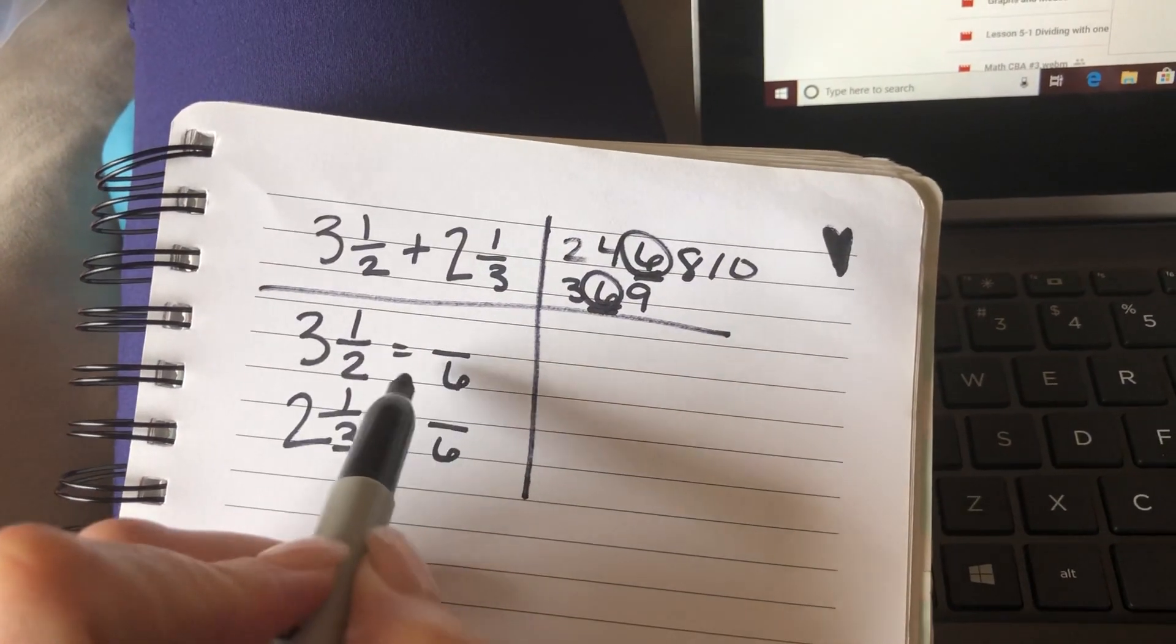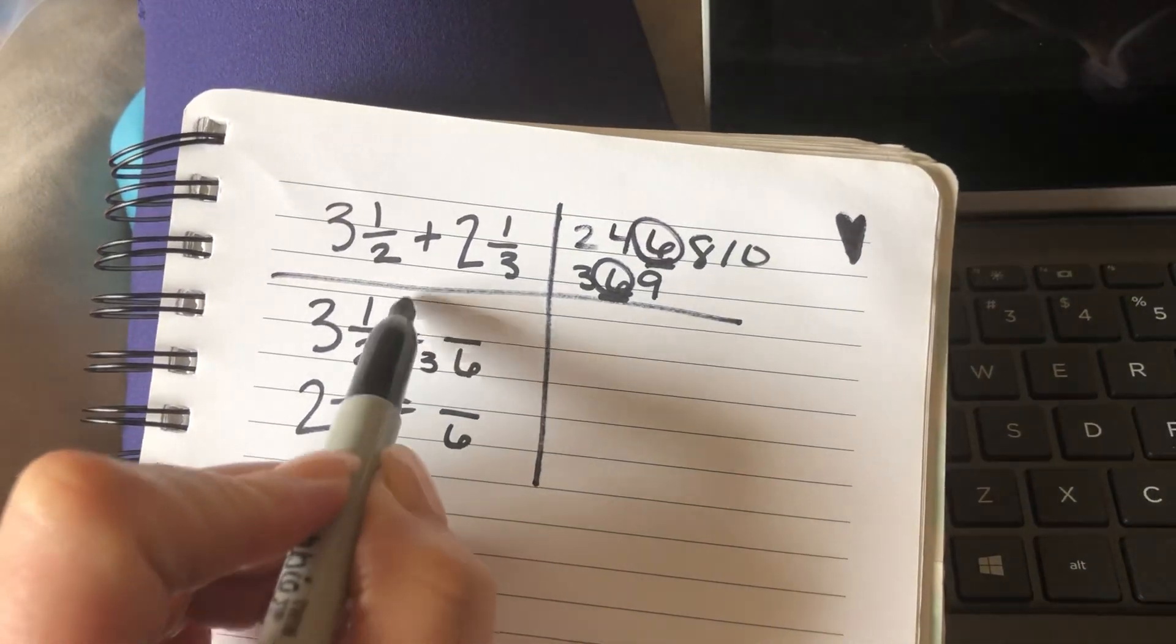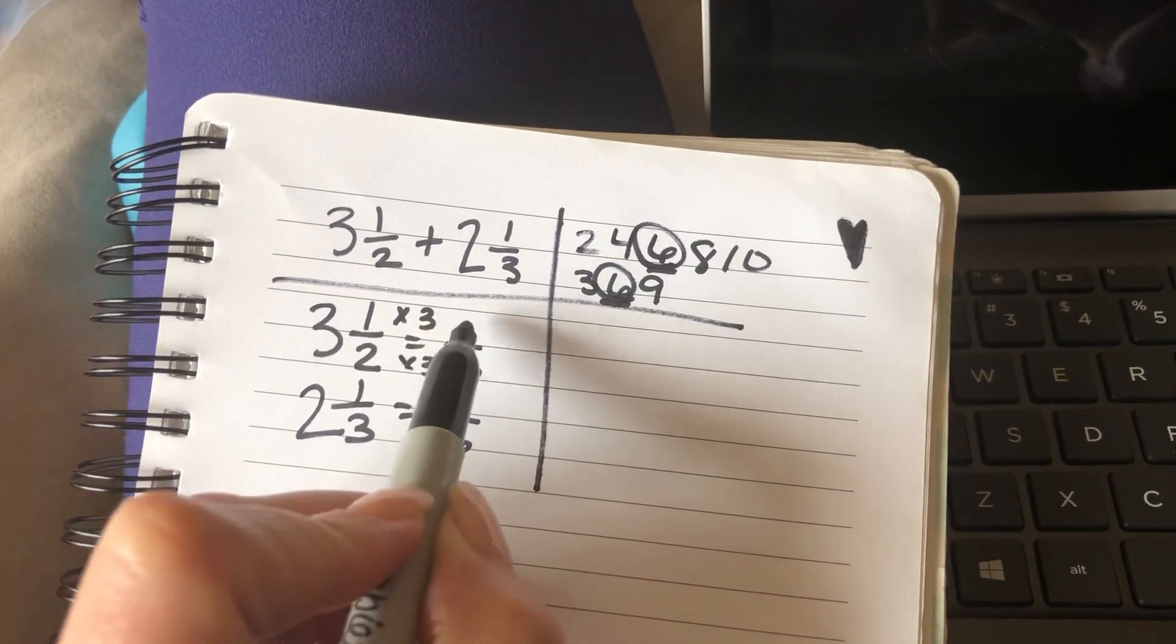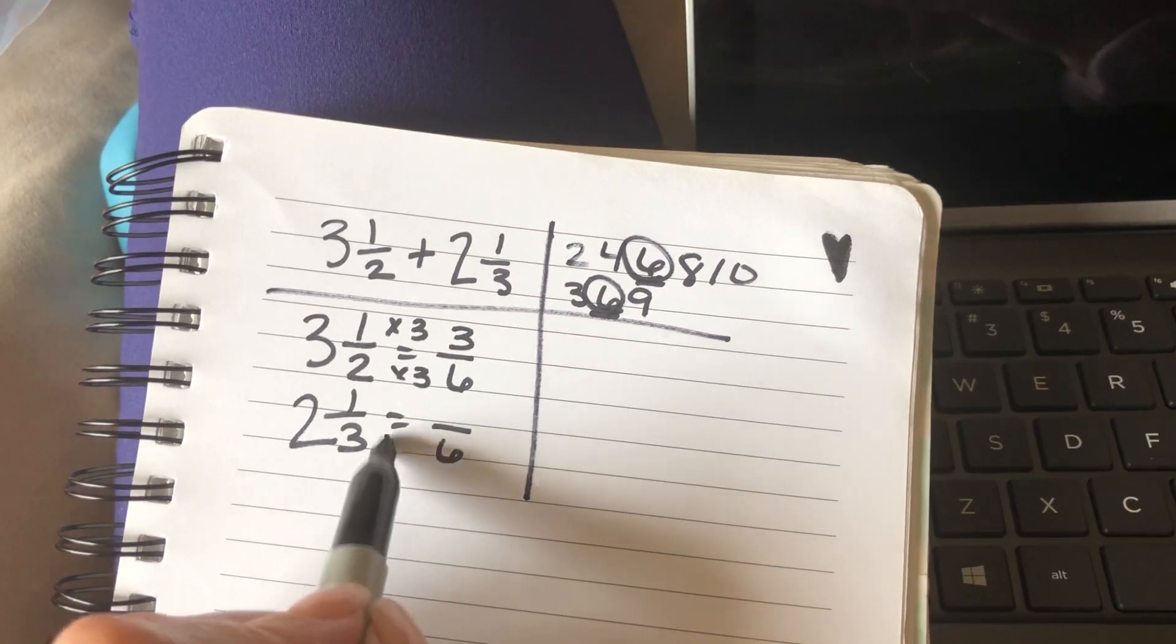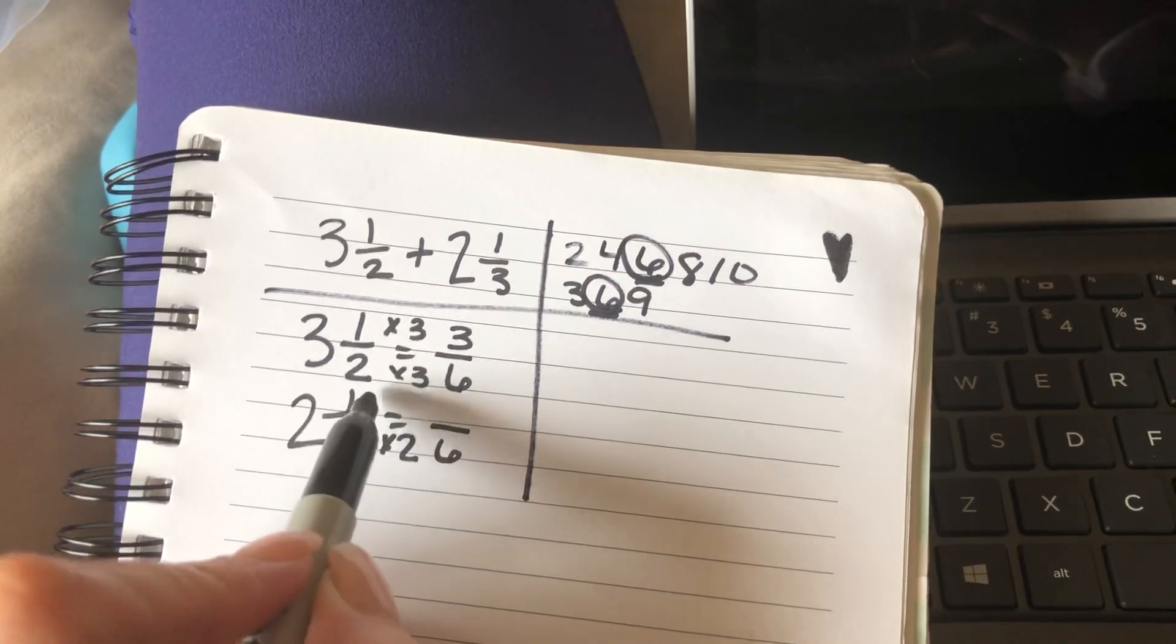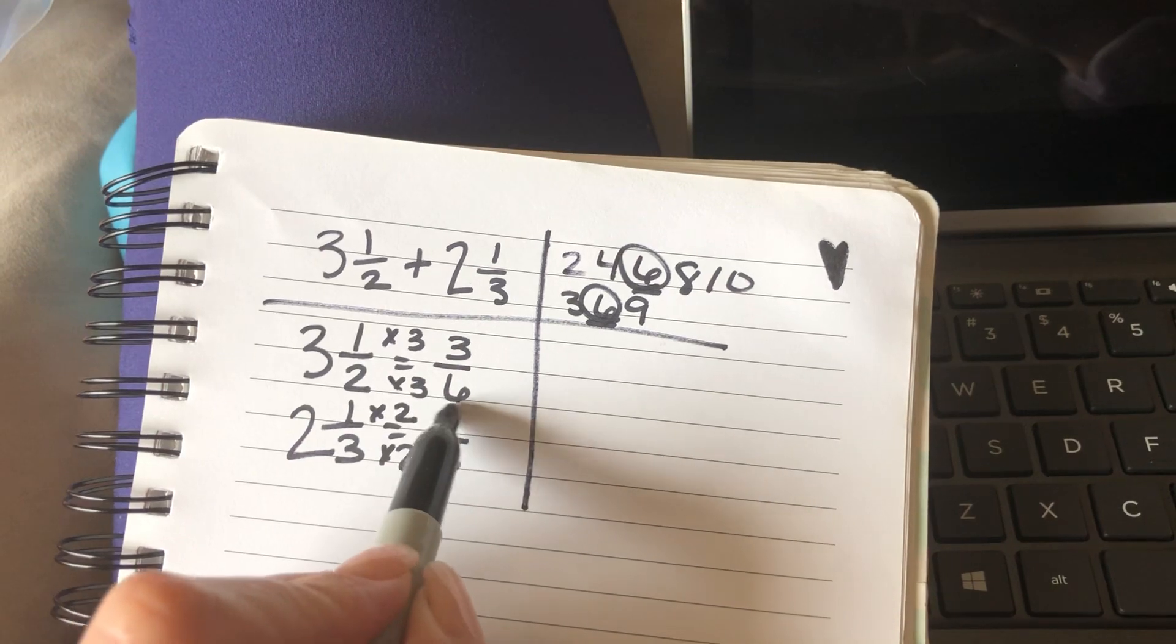2 times what is 6? 2 times 3. So we do the same to the top. 1 times 3 is 3. 3 times what is 6? 3 times 2. So 1 times 2 is 2.